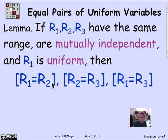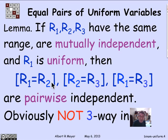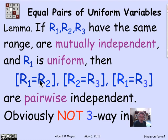In fact, they're not mutually independent — they're pairwise independent. They're obviously not three-way independent, because if I know that R1 equals R2, and I know that R2 equals R3, it follows that R1 equals R3. So given those two events, the probability of the third changes dramatically to certainty.